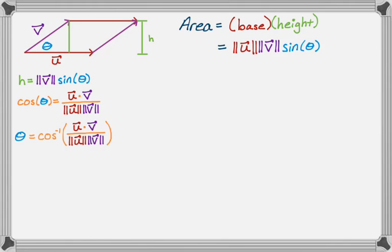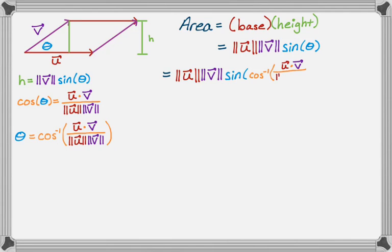So our area is the magnitude of u times the magnitude of v times the sine of theta, where theta is the inverse cosine of the dot product over the product of the magnitudes. Don't worry, because things are going to clean up. I've done problems where I had a composition of a trig function and an inverse trig function, and to deal with that I always drew a triangle.